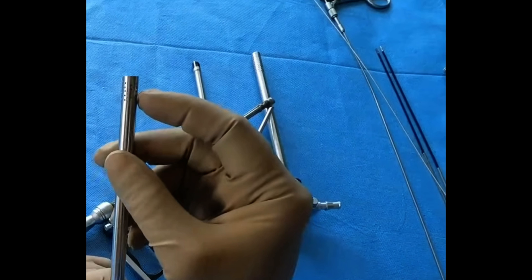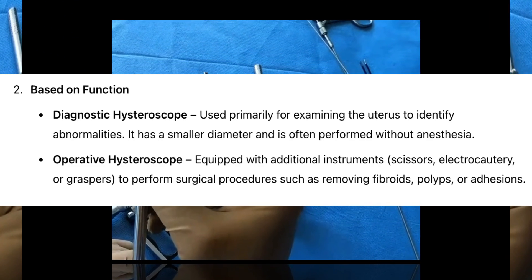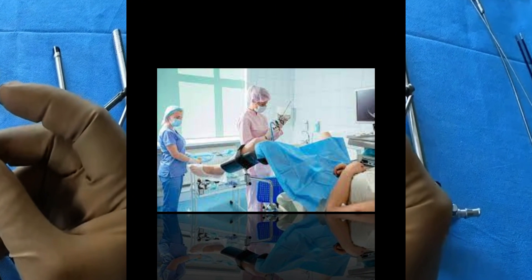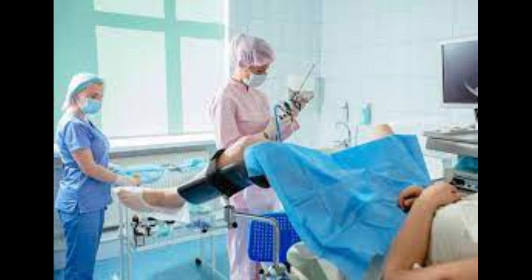Based on function: Diagnostic hysteroscope — used primarily for examining the uterus to identify abnormalities. It has a smaller diameter and is often performed without anesthesia. Operative hysteroscope — equipped with additional instruments such as scissors, electrocautery, or graspers to perform surgical procedures such as removing fibroids, polyps, or adhesions.